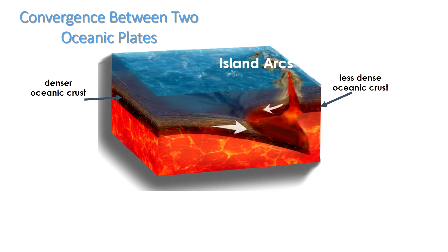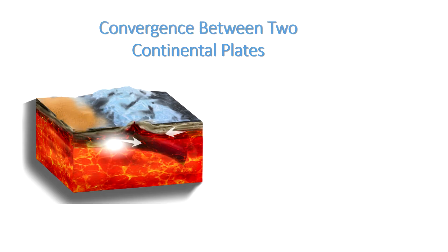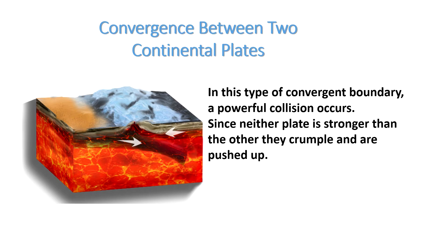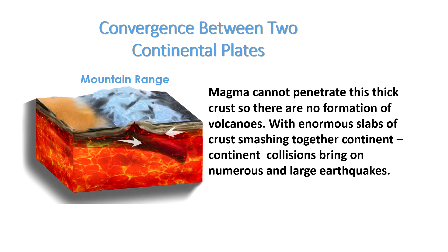With continued development the islands grow larger, merge, and an elongate landmass is created. Other consequences at this boundary include a zone of progressively deeper earthquakes, tsunamis, oceanic trenches, and destruction of oceanic lithosphere. When two continental plates converge, a powerful collision occurs. Since neither plate is stronger than the other, they crumple and are pushed up, leading to the formation of huge, high mountain ranges — like the famous Himalayas. Magma cannot penetrate the thick crust so no volcanoes form, but enormous slabs of crust smashing together bring on numerous large earthquakes.